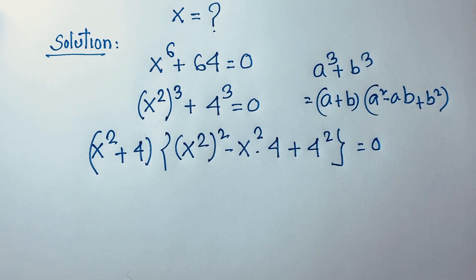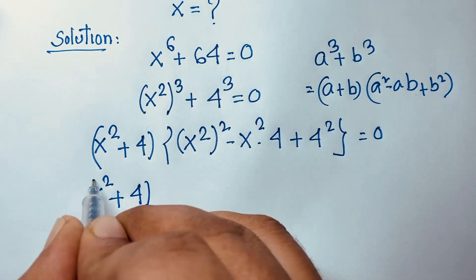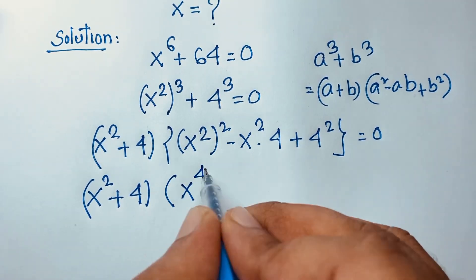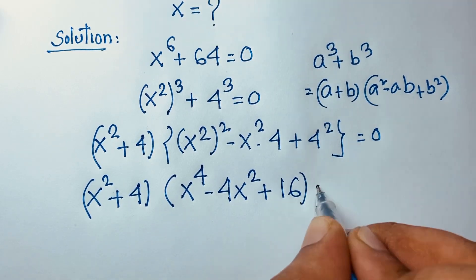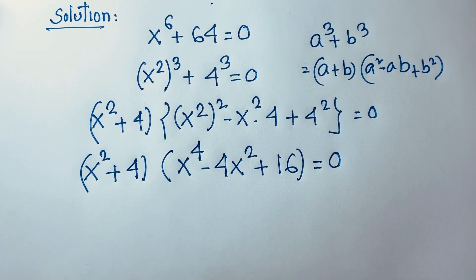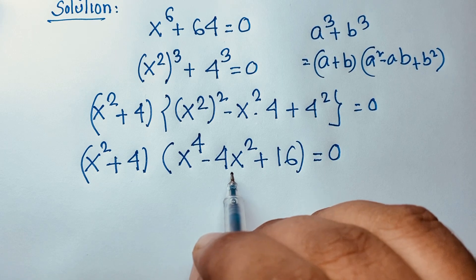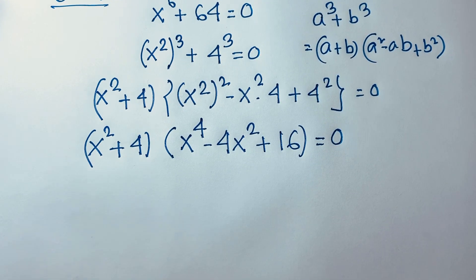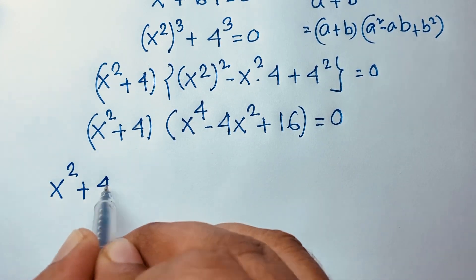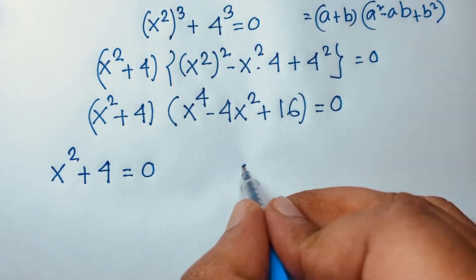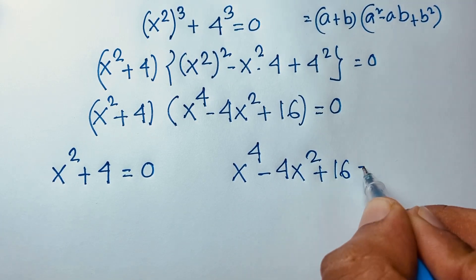Now applying the formula, with a = x² and b = 4, we get x squared plus 4, times x to the power 4 minus 4x squared plus 16, equals 0. So we have found two equations: x squared plus 4 equals 0, and x to the power 4 minus 4x squared plus 16 equals 0.